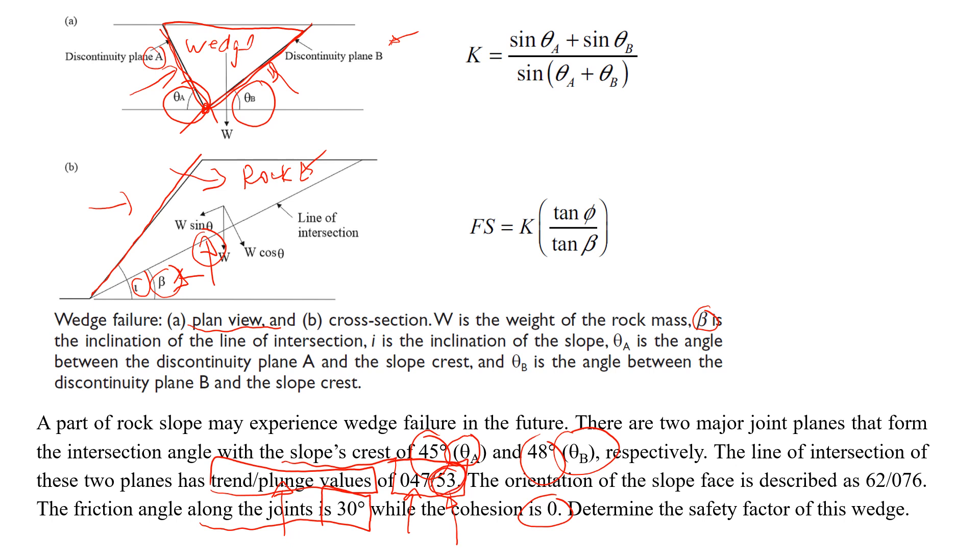So in this case we just need inclination and this is the angle 53 degrees. We're also given this orientation of the slope face, so it will give you dip and dip direction. So dip direction will be again three decimal numbers, 0.76, and dip will be 62. I'm not sure if we need this information, probably we don't need it.